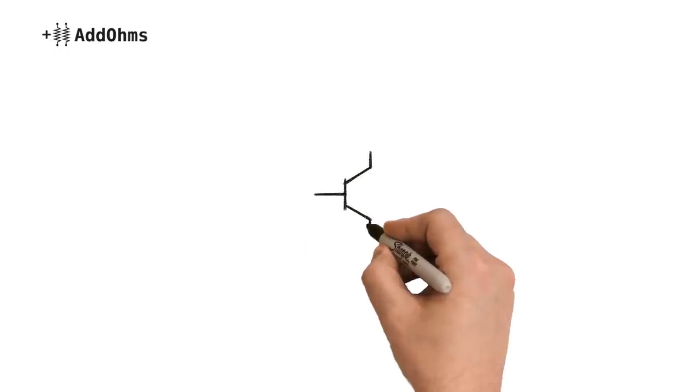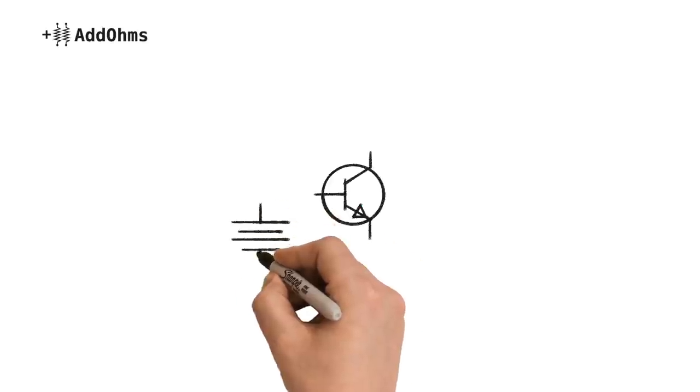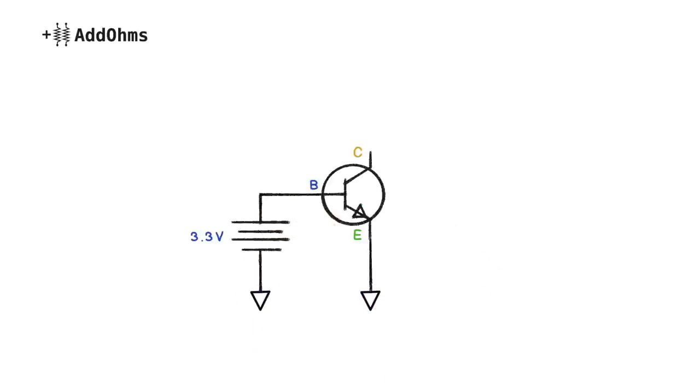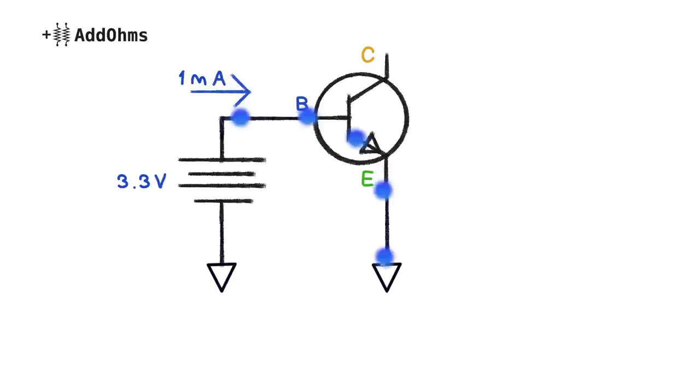Back to the transistor itself. Let's say you have this transistor and apply a voltage at the base, while connecting the emitter to ground, which allows 1 milliamp of current to flow. The key to this transistor is that when this happens, 100 milliamps will be allowed to flow from the collector to the emitter.